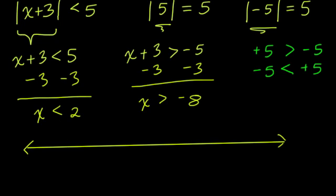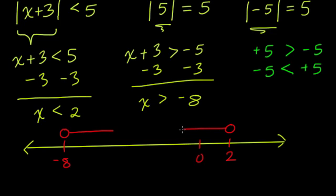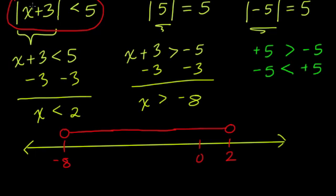So x is less than 2 — I'll mark 2 here. And x is greater than negative 8 — here's 0, and negative 8 is over here. Every number greater than negative 8, I go this way; every number less than 2, I go this way. Eventually these two things will meet, and this range of numbers is what we're plotting — the x values that plug into our original equation and give a distance, an absolute value distance from 0, that's less than 5.